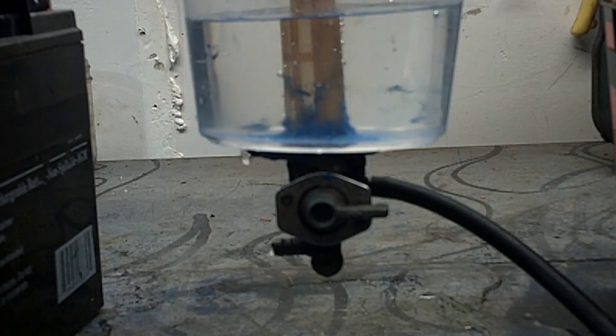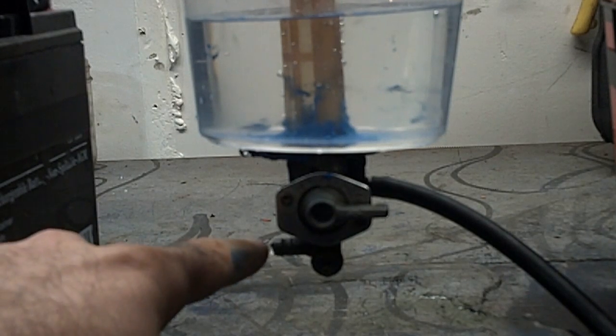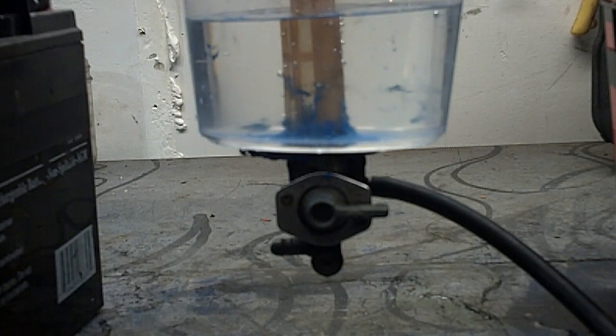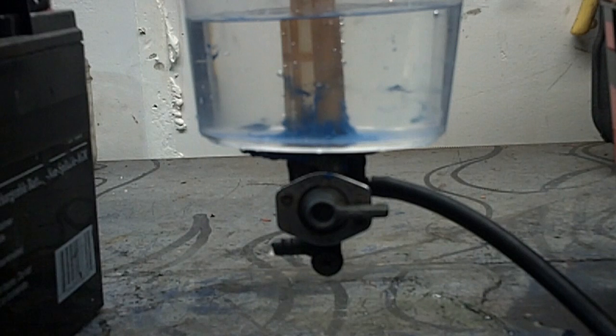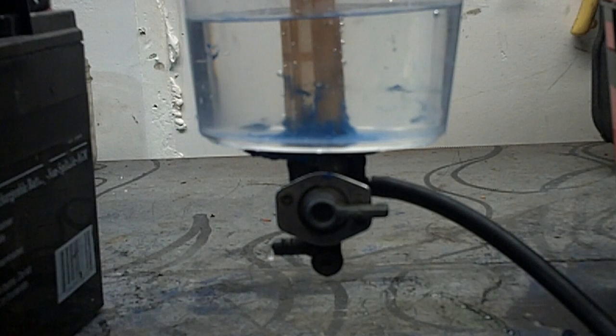Now, you see this old petcock here is still continuing to dribble after I've released all the vacuum. That means that it's got some problem. Either the diaphragm inside is dirty or the little plunger piece has a bad gasket on it or whatever. So it is in need of some service.